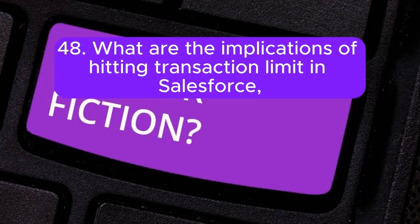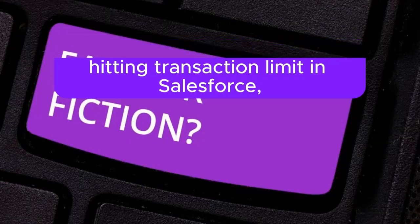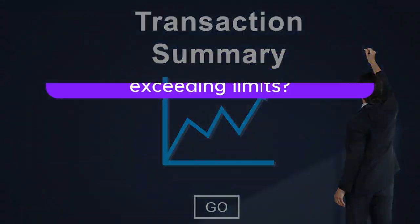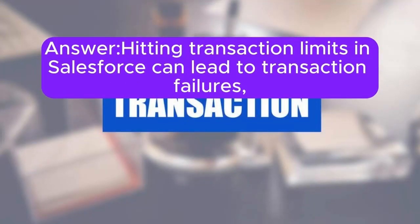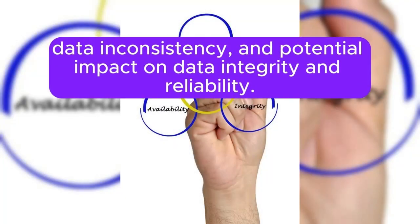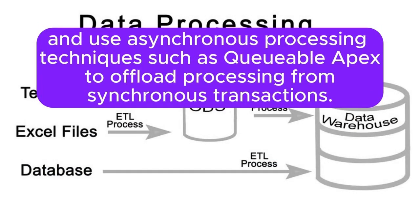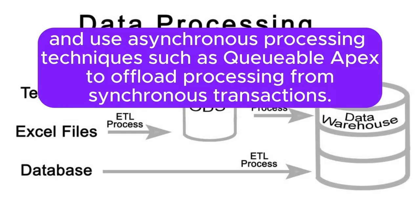Question 48: What are the implications of hitting transaction limits in Salesforce, and how do you optimize transaction management to avoid exceeding limits? Answer: Hitting transaction limits in Salesforce can lead to transaction failures, data inconsistency, and potential impact on data integrity and reliability. To optimize transaction management, you can minimize transaction size, reduce the number of operations per transaction, and use asynchronous processing techniques such as Queueable Apex to offload processing from synchronous transactions.